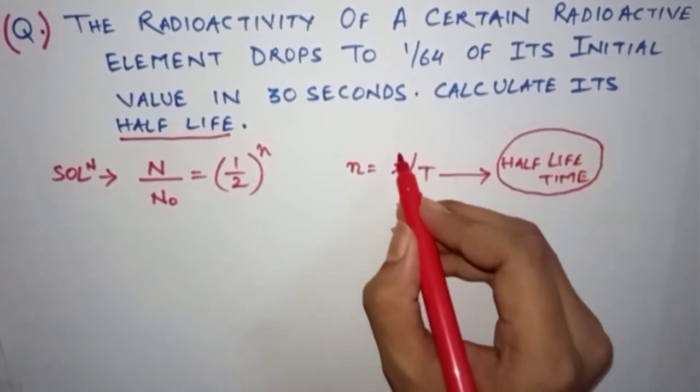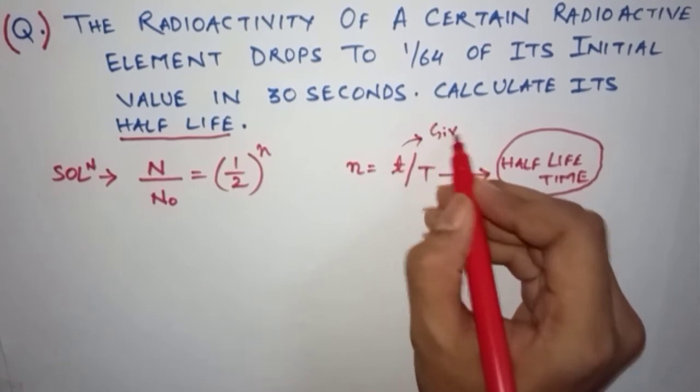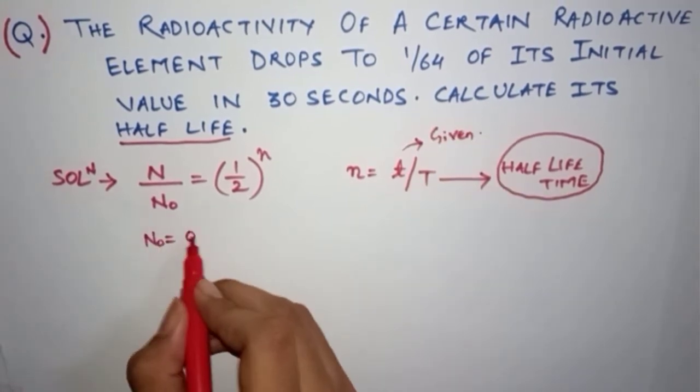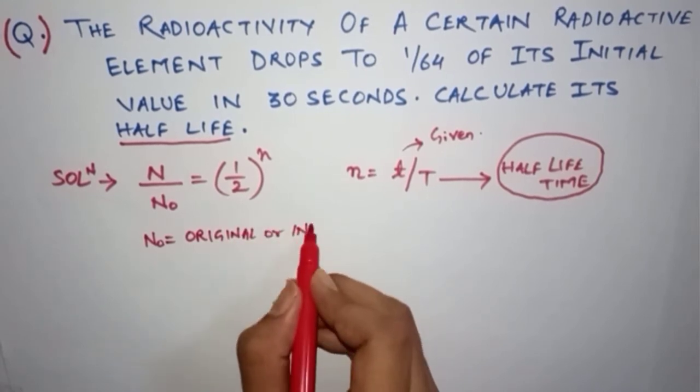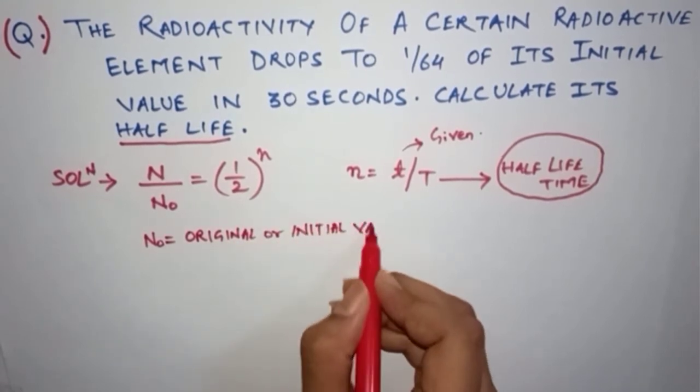But what is small t? Small t is the given time which is given in the question. Now what is N₀? N₀ we can say is the original value or the initial value of the radioactive element.